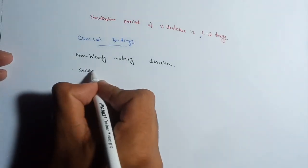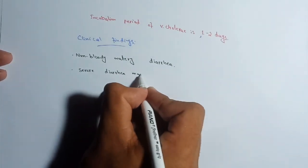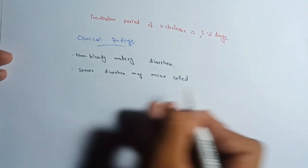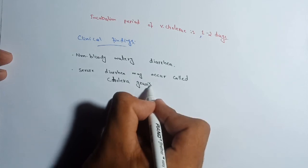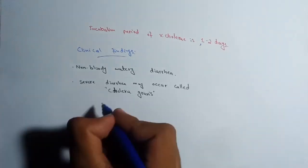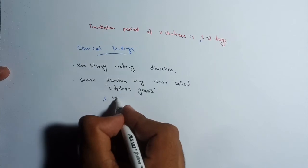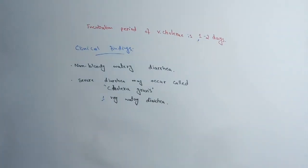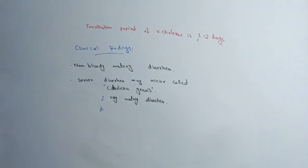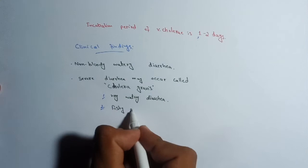Severe diarrhea may occur called cholera gravis. Here we have some clinical findings of cholera gravis. In cholera gravis, there will be very watery diarrhea and sometimes fishy odor stools.